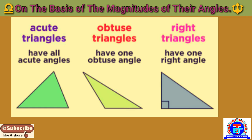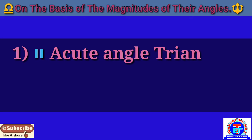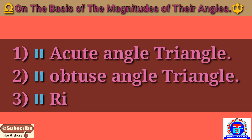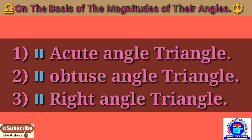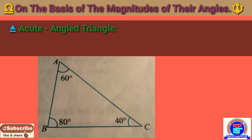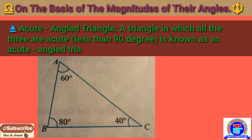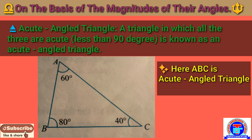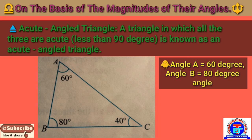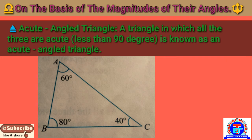On the basis of angles, we classify triangles as: Number 1, acute angle triangle; Number 2, obtuse angle triangle; and Number 3, right angle triangle. An acute angle triangle is a triangle in which all three angles are acute, meaning less than 90 degrees. In this figure, triangle ABC has angle A = 60°, angle B = 80°, and angle C = 40°, so it is an acute angle triangle.